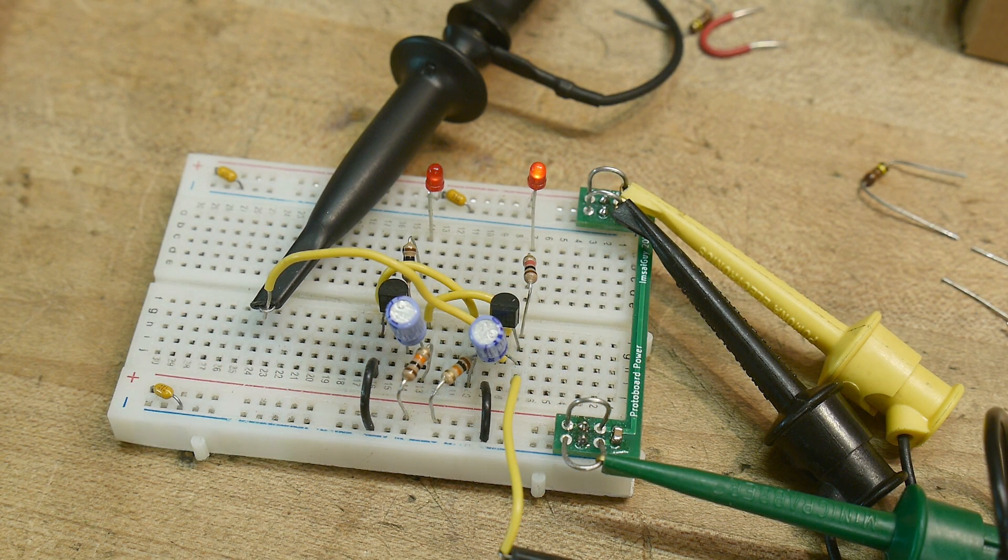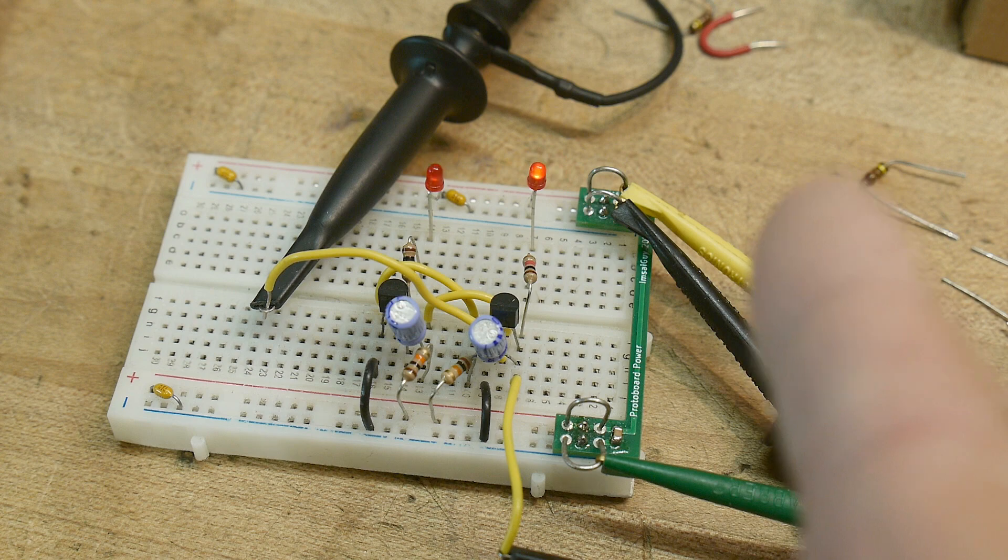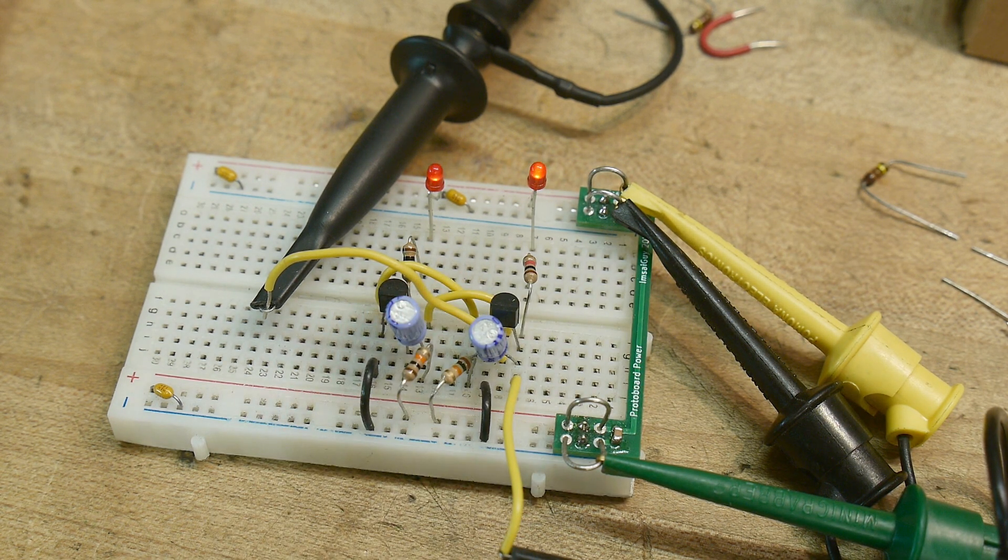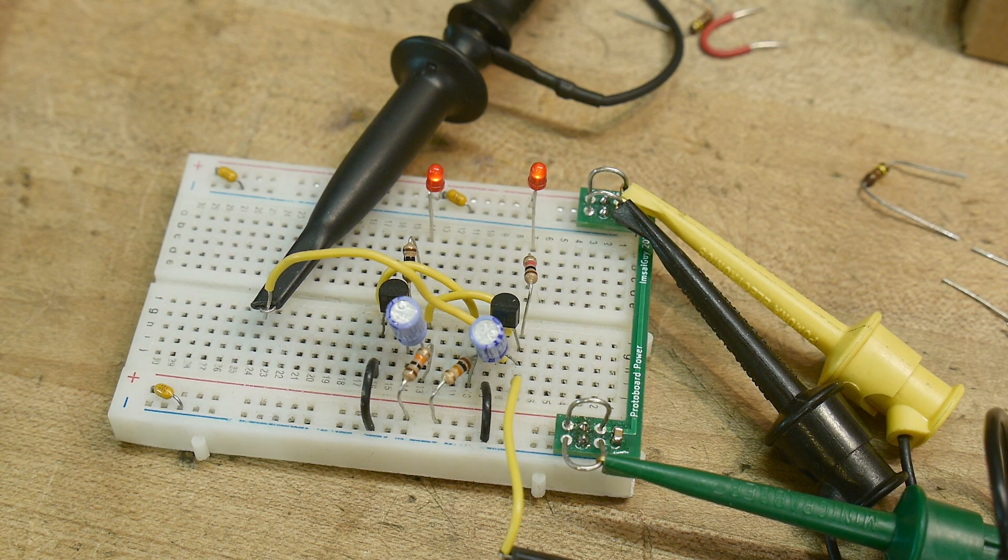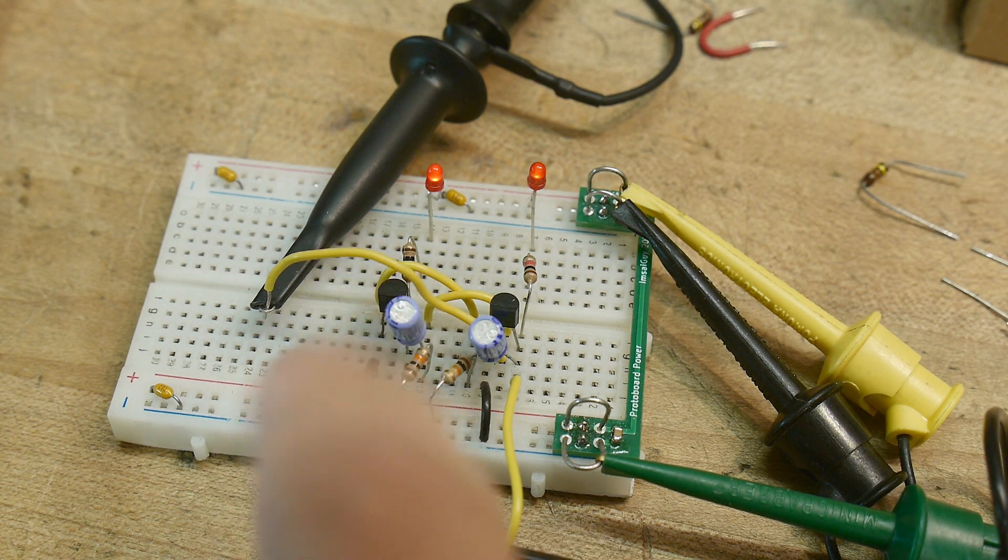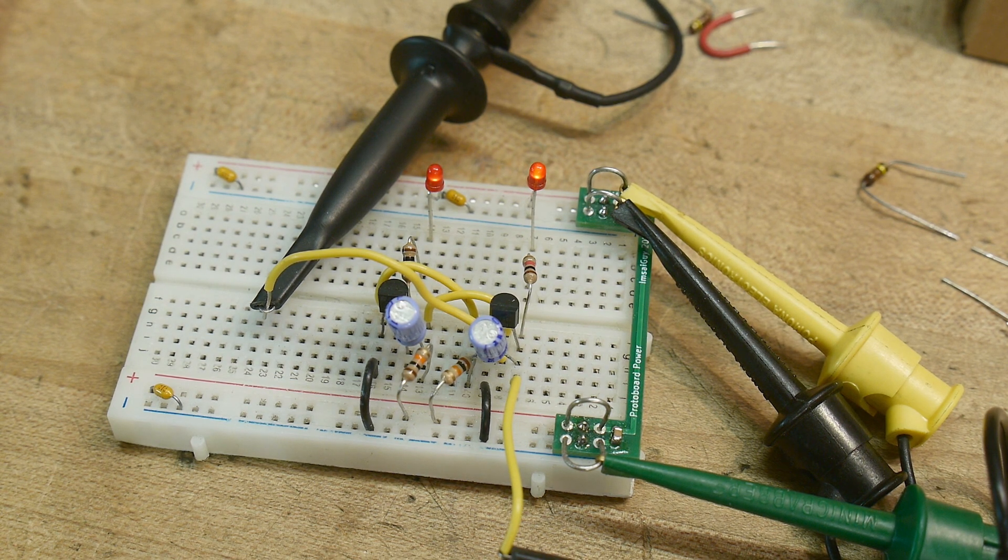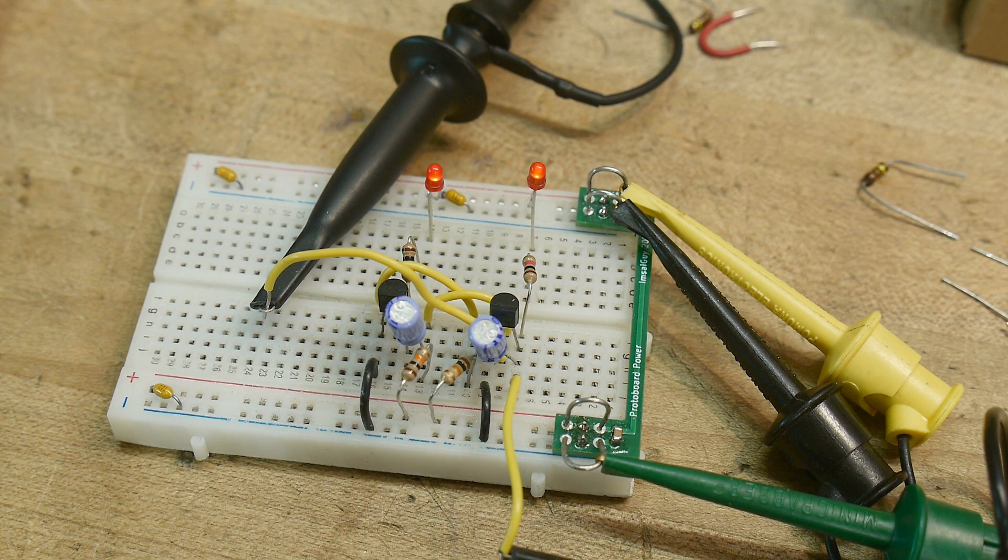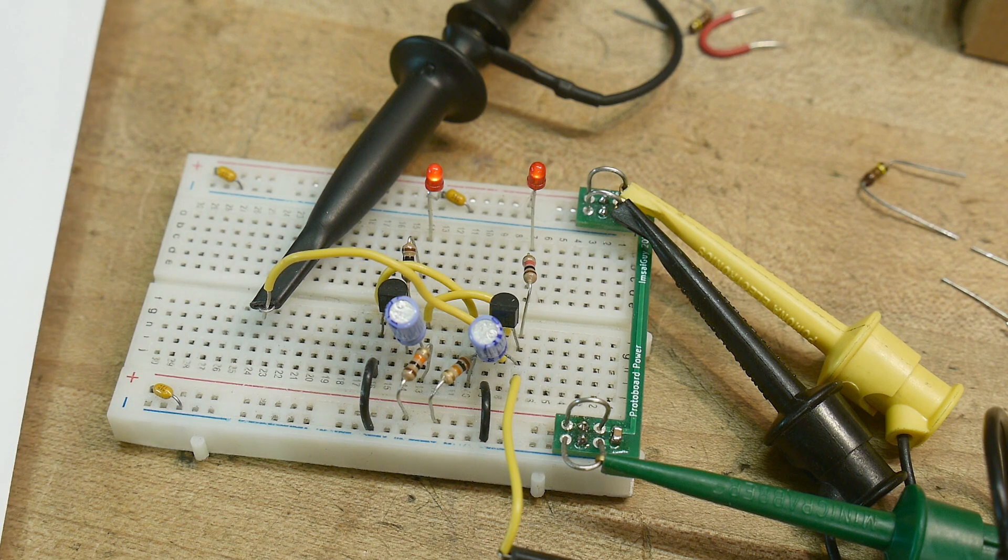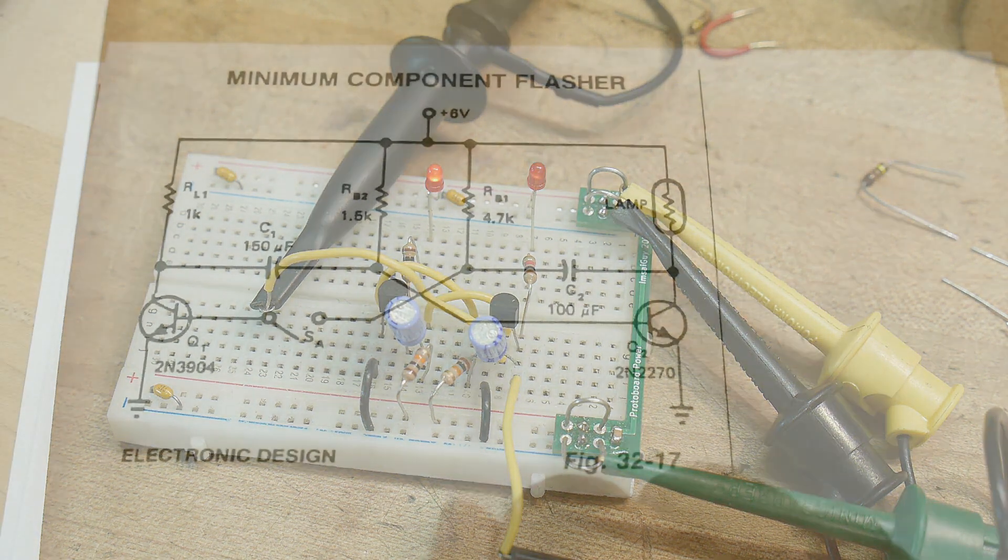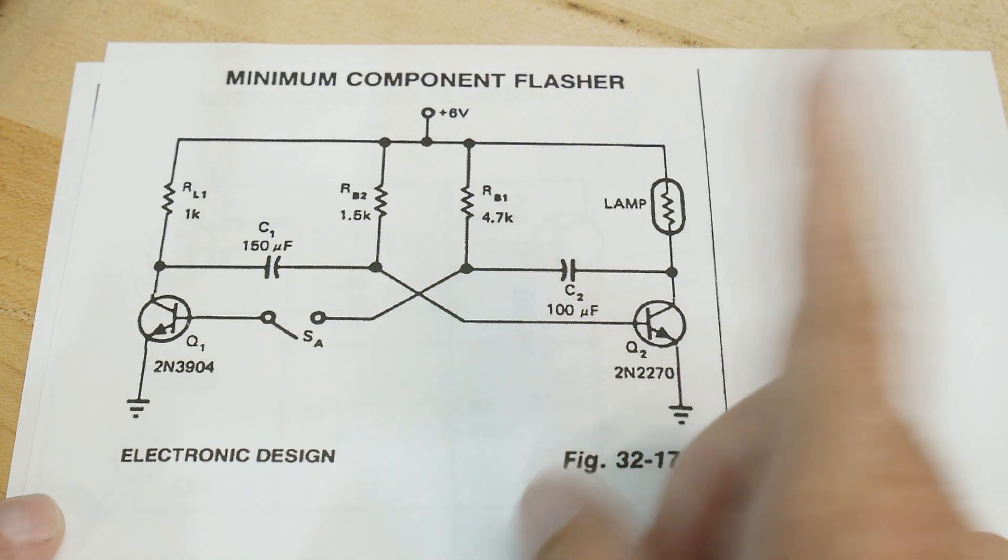If you watched yesterday's video, this is deja vu. Look at this - it's two LEDs flashing with two transistors. But what's different today is that we're going to be using NPN transistors instead of PNP transistors. So things should look familiar and maybe not so. Let's take a look at the schematic here.